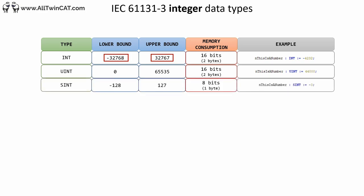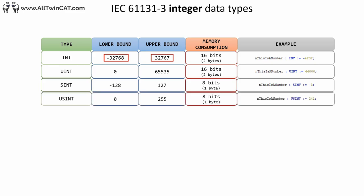Next we have the short signed integer SINT, which only occupies one byte compared to the signed integer. Then we have the unsigned version — the unsigned short integer USINT — occupying the same amount of memory but only allowing positive integers.